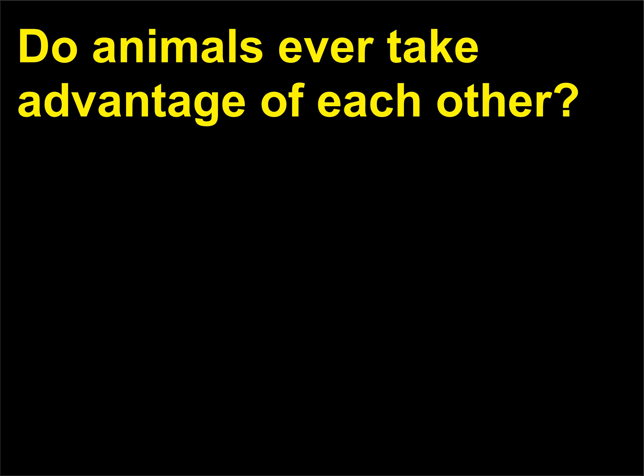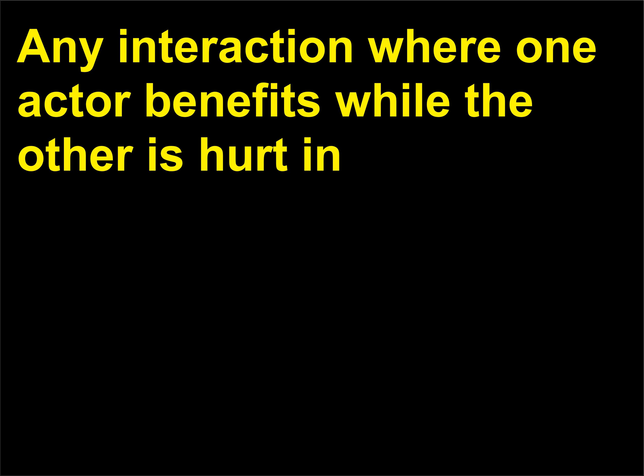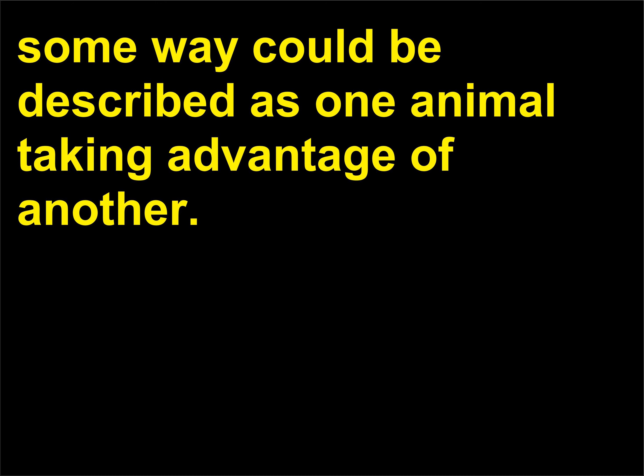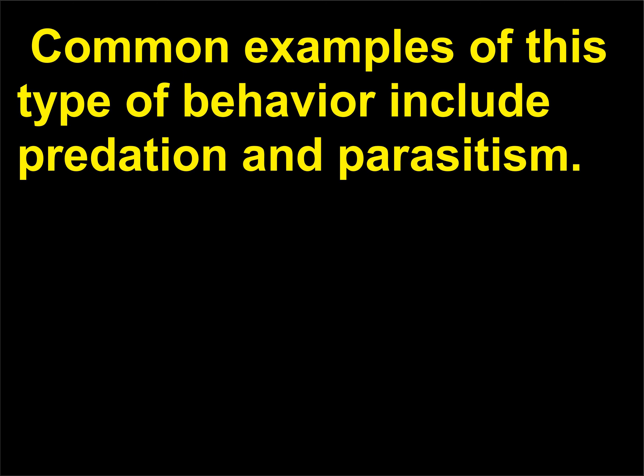Do animals ever take advantage of each other? Any interaction where one actor benefits while the other is hurt in some way could be described as one animal taking advantage of another. Common examples of this type of behavior include predation and parasitism.